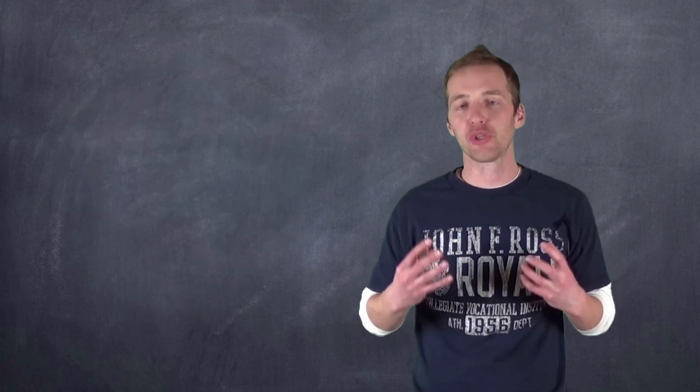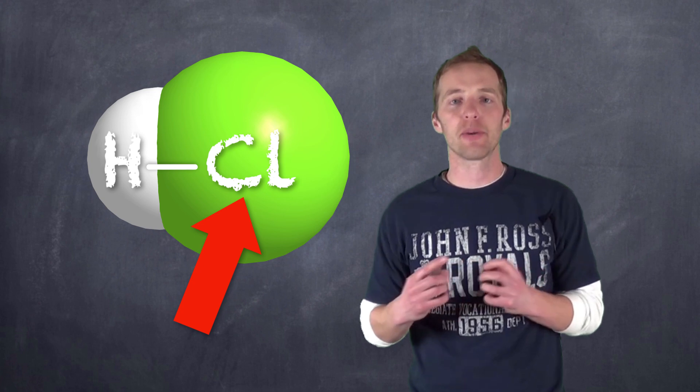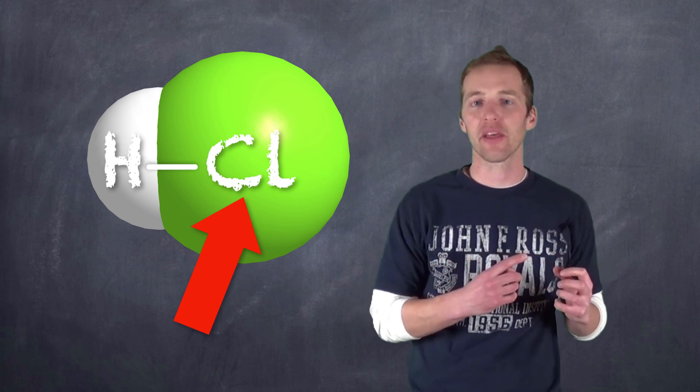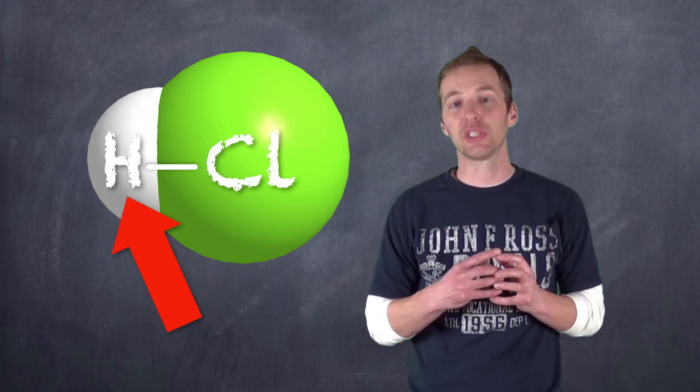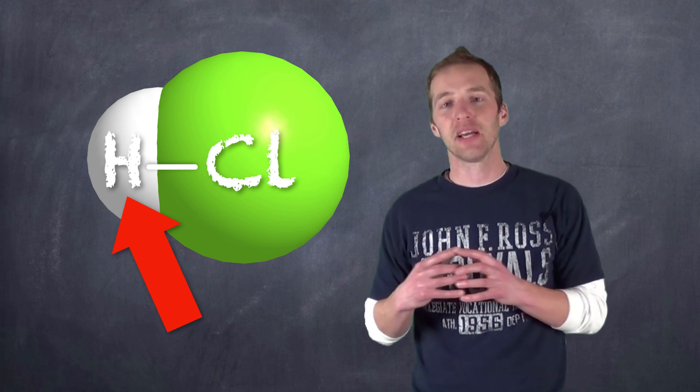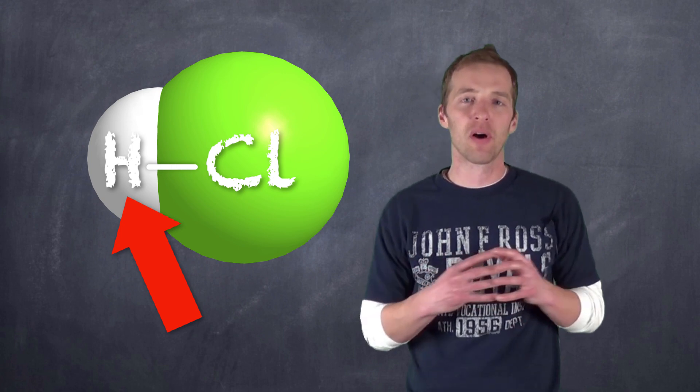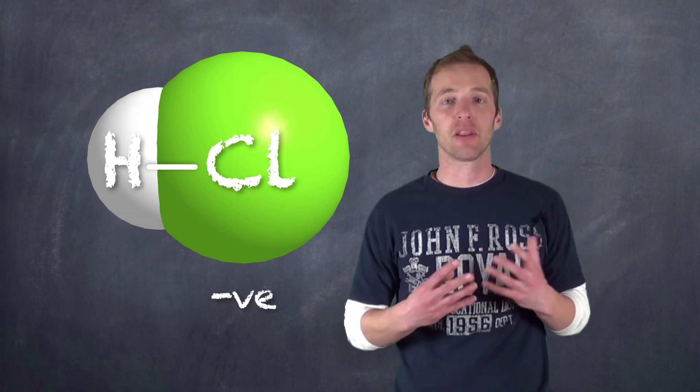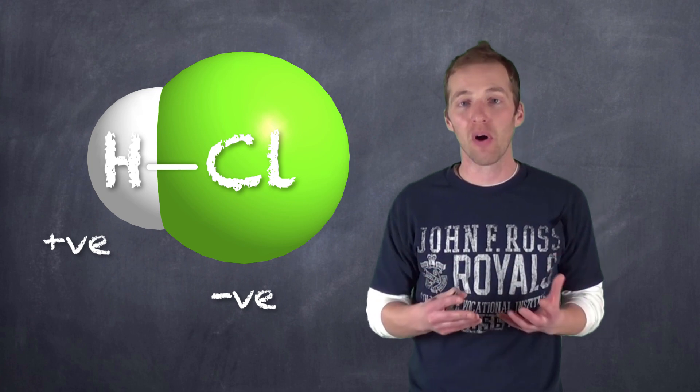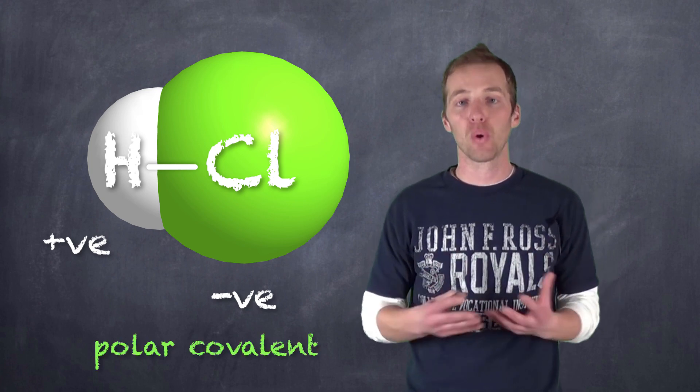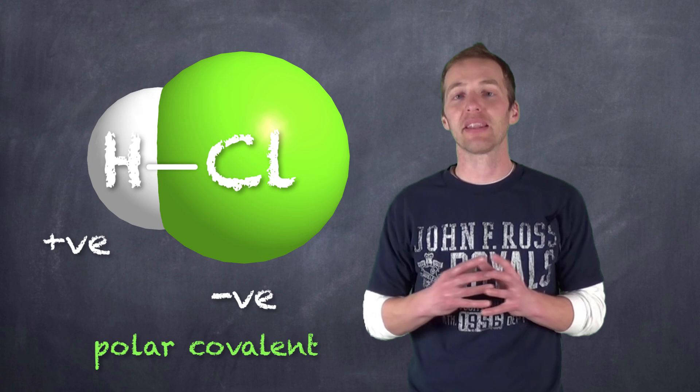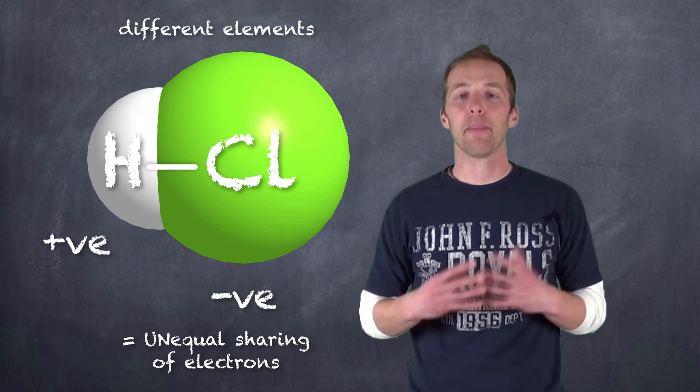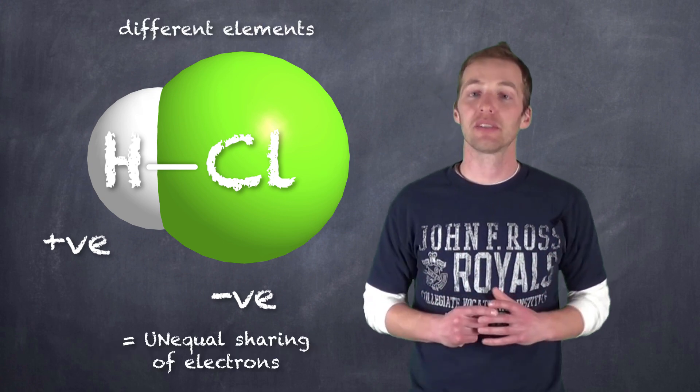But what we notice when we have two non-metals that are different is that there's an unequal sharing, that one of the elements in the bond has a greater demand for those electrons than does the other one. And since the electrons are negatively charged, we start to notice a negative distribution of charge more towards one end of the bond than the other. So one end of the bond now becomes slightly negative, the other end of the bond becomes slightly positive, and we refer to this bond now as being polar covalent. The electrons are still shared, but there's an unequal sharing. And because of that, the bond becomes slightly polar.